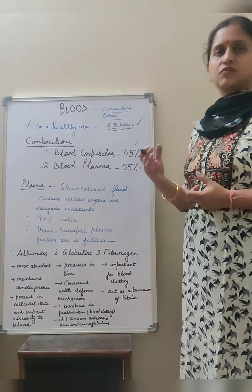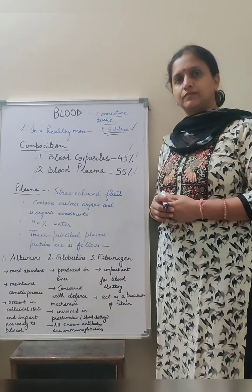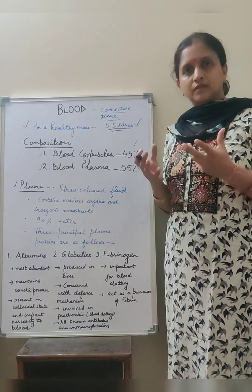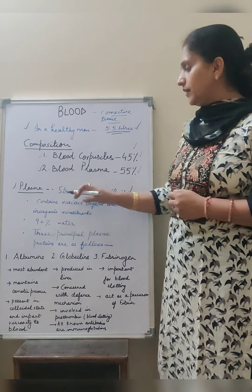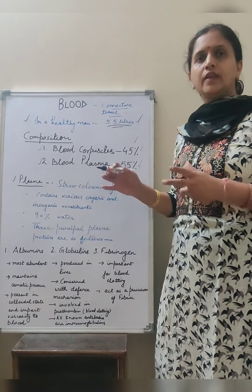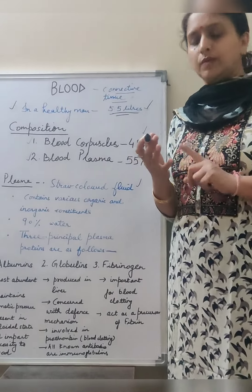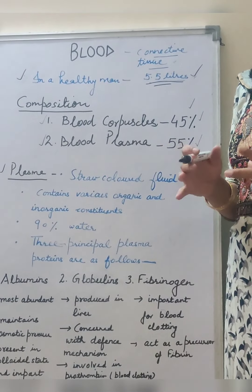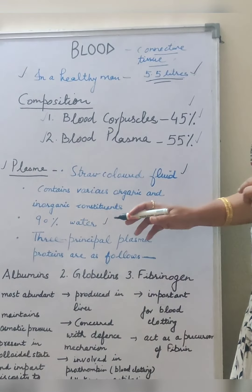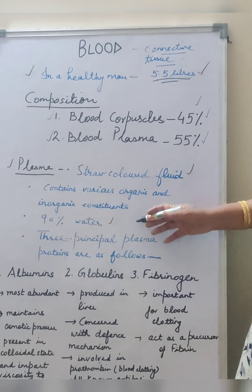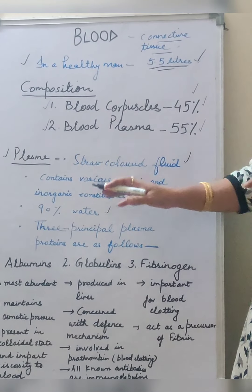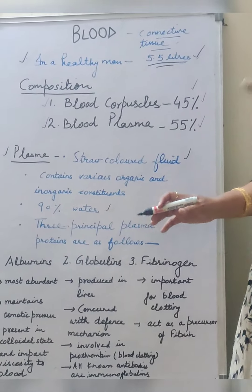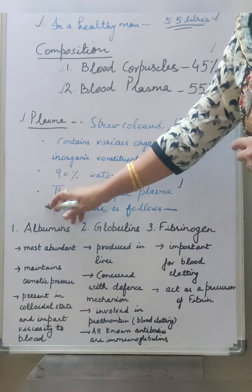I will discuss one by one. First, what is plasma? Plasma is the liquid part of the blood. It is straw-colored. It contains different organic and inorganic constituents — they may be carbohydrates, proteins, or fats. All of these are present within the plasma. It contains about 90% water, and it has three main principal proteins.